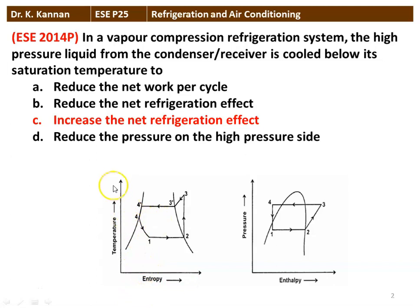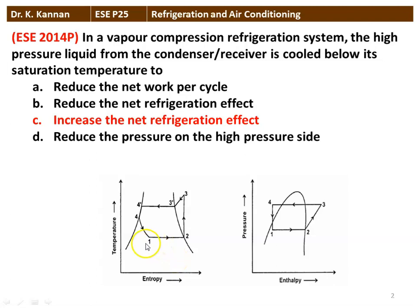In the temperature-entropy diagram, the vapor compression refrigeration cycle is shown. Point 4 is the end of condensation, 4-dash is the saturation condition, and the process from 4 to 4-dash is undercooling — cooling below the saturation temperature. Because of undercooling, point 1 shifts to the left on the T-S diagram. The length 1 to 2 represents the refrigeration effect in the evaporator, which increases. Therefore, undercooling increases the net refrigeration effect — that is the correct answer.